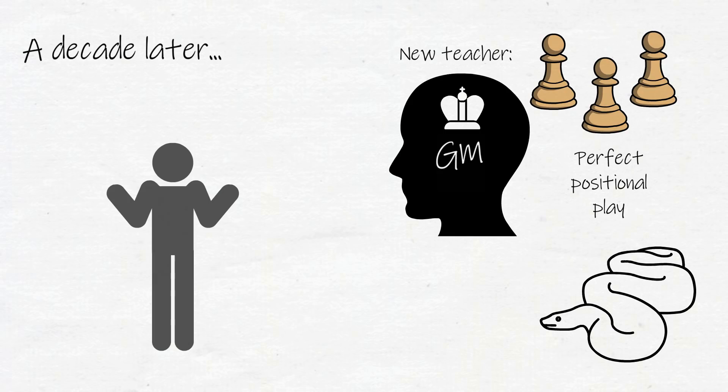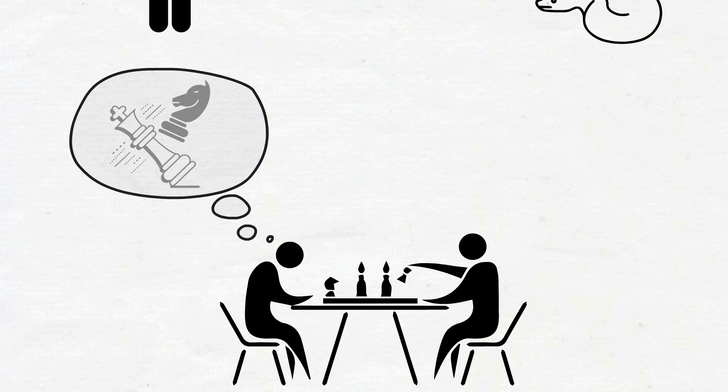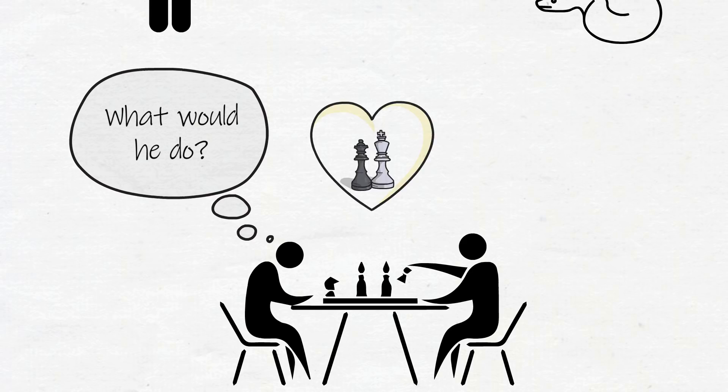This style felt foreign to Josh. He had loved moving games into a chaotic position and then finding a brilliant attack within the chaos by trusting his intuition. But now he was being told to think like someone else. By moving away from his natural inclinations and trying to mold himself to someone else's style, his love for chess vanished, and he ultimately stopped competing.